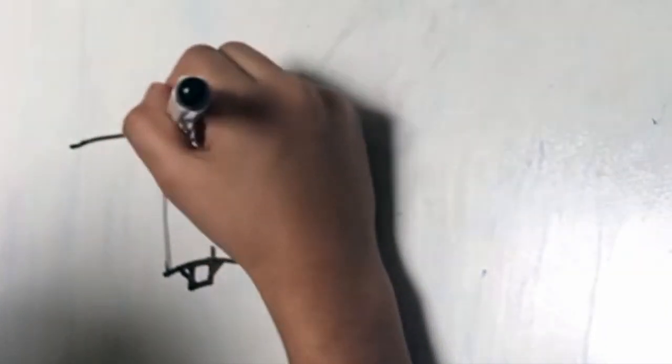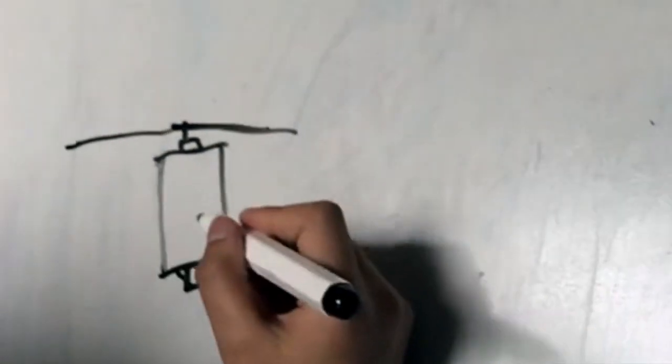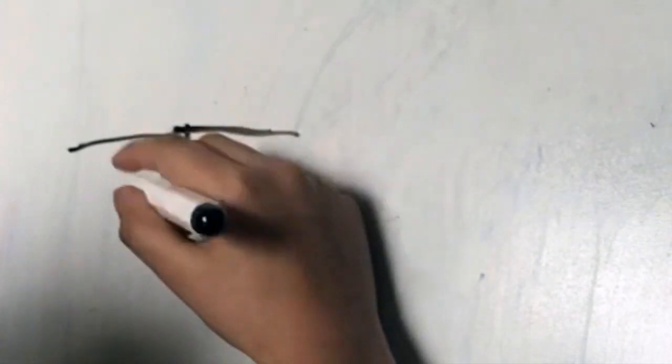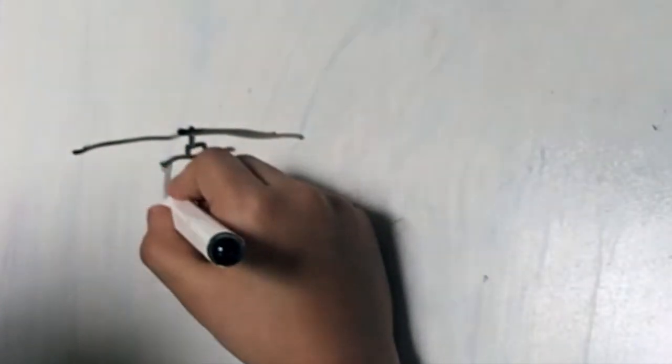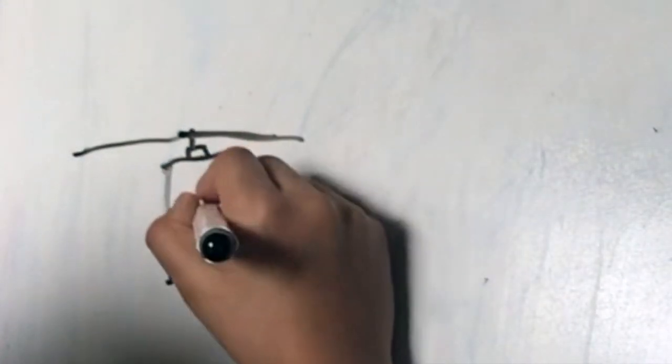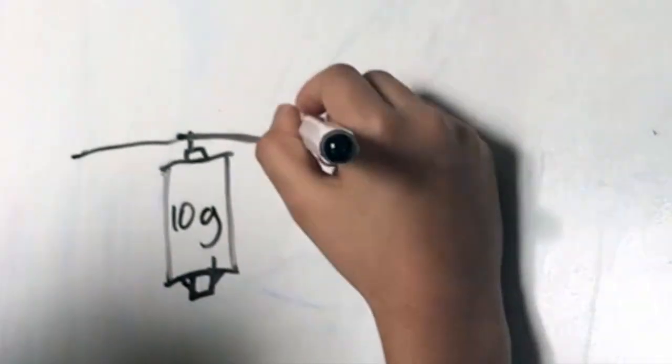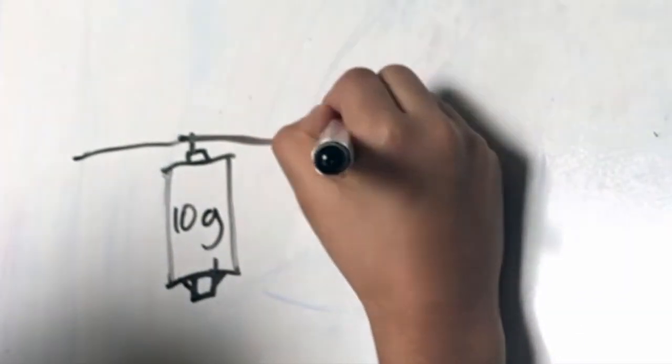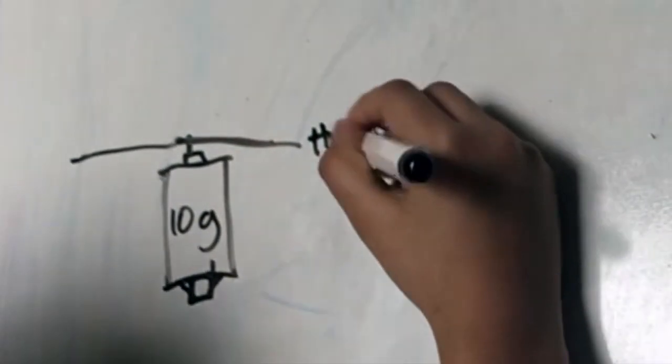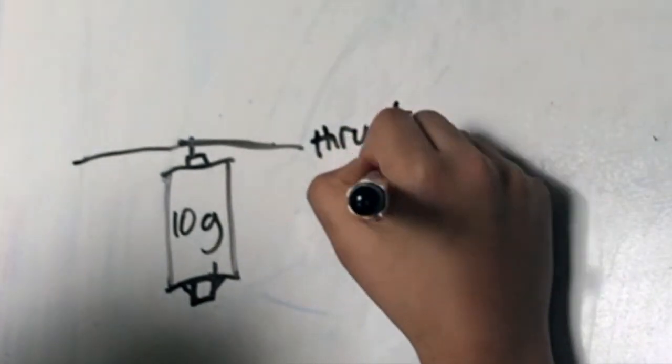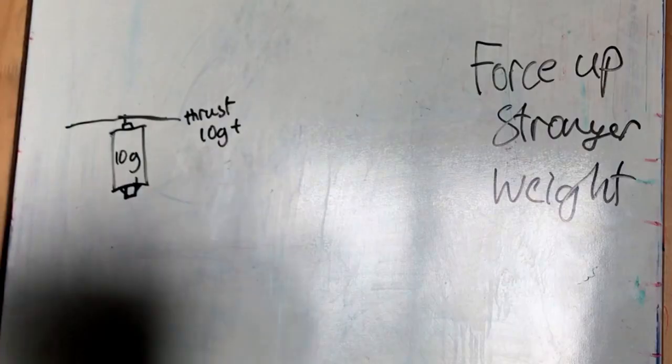So how do we do that? We need to make a drone with a lift. This is our drone motor that's stronger than this. So if this is 10 grams, this has to be able to have a thrust of more than 10 G+.